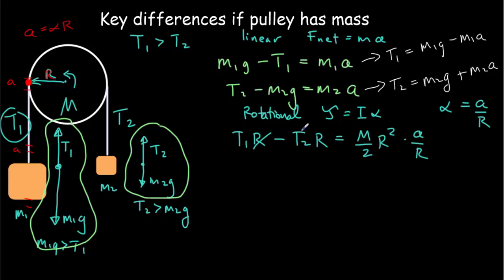We can cancel out some R's. In fact, they're all going to go out. And we end up with this expression, T1 minus T2 equals M over 2 times A.